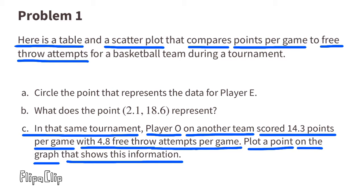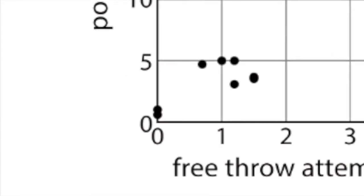Part (c): In that same tournament, Player O on another team scored 14.3 points per game with 4.8 free throw attempts per game. Plot a point on the graph that shows this information. Starting at the origin in the lower left-hand corner...